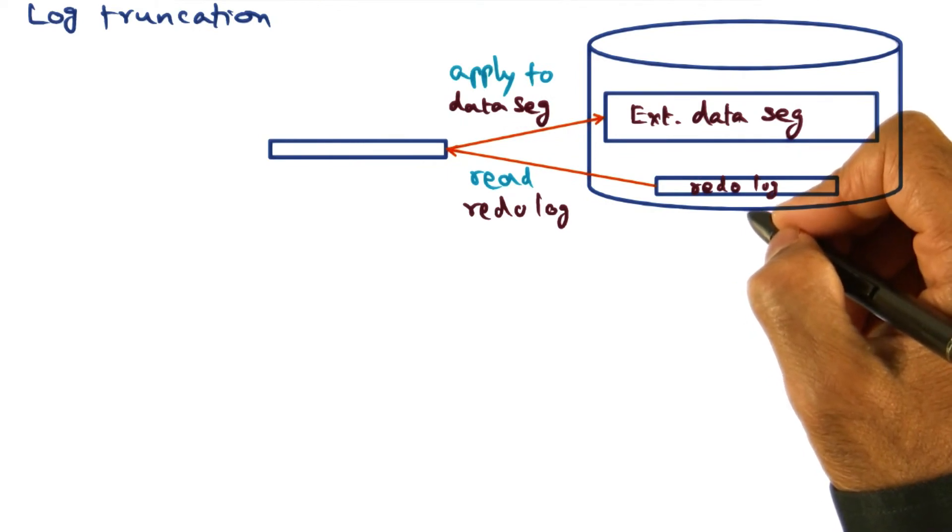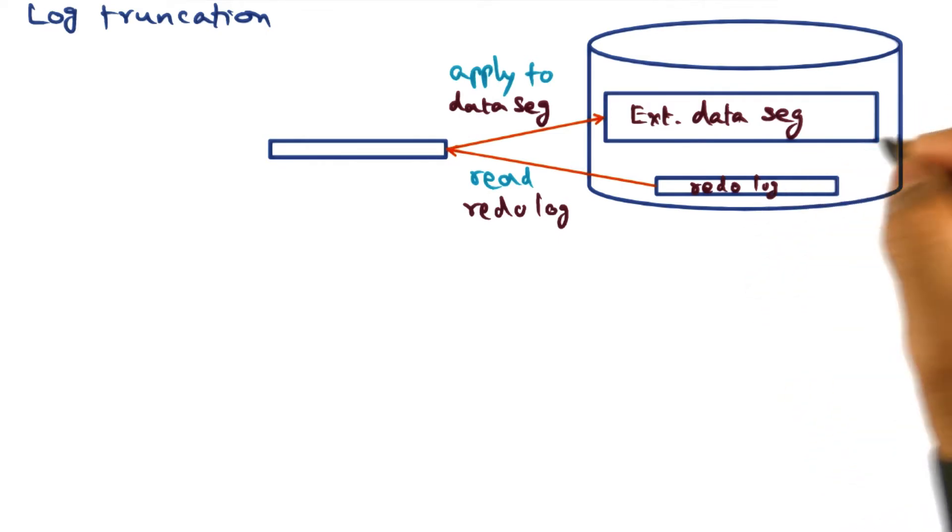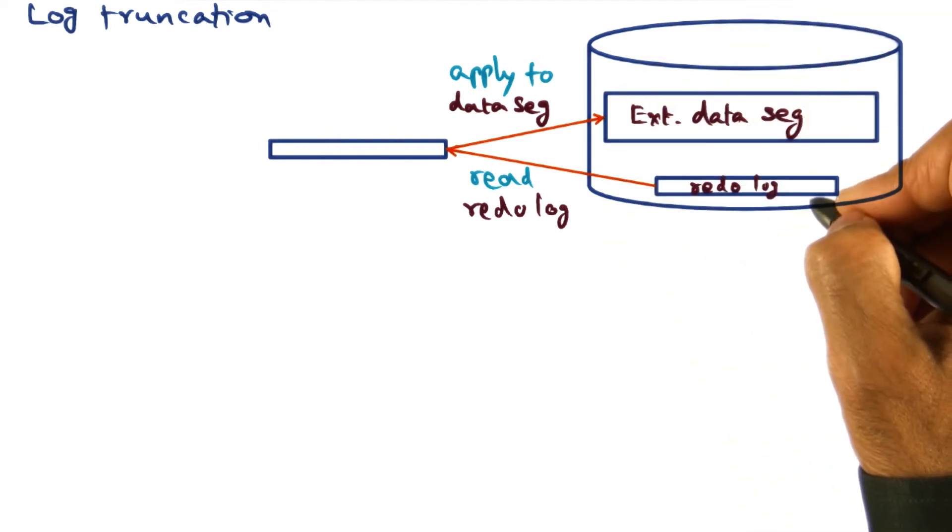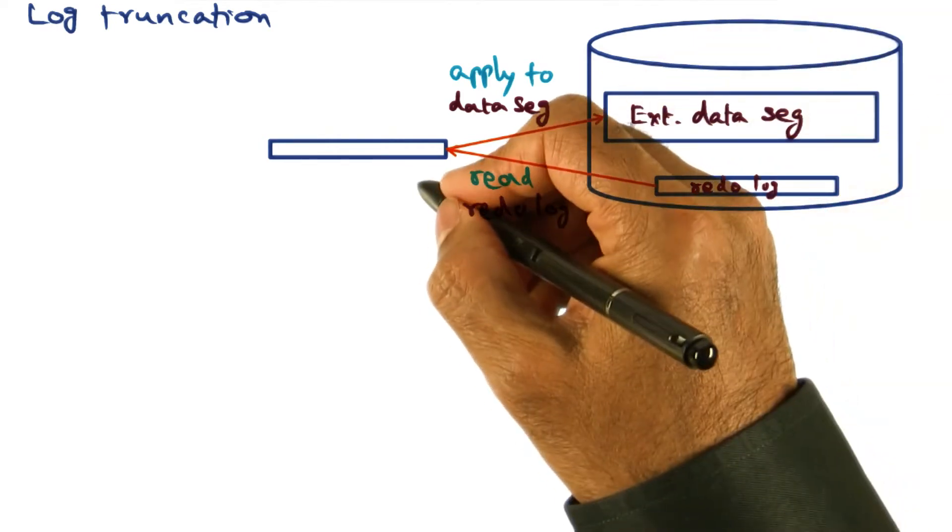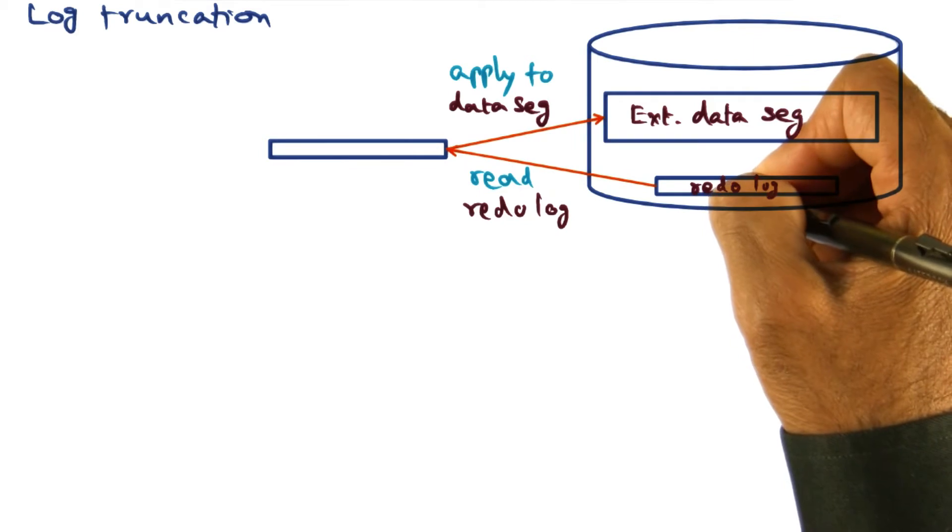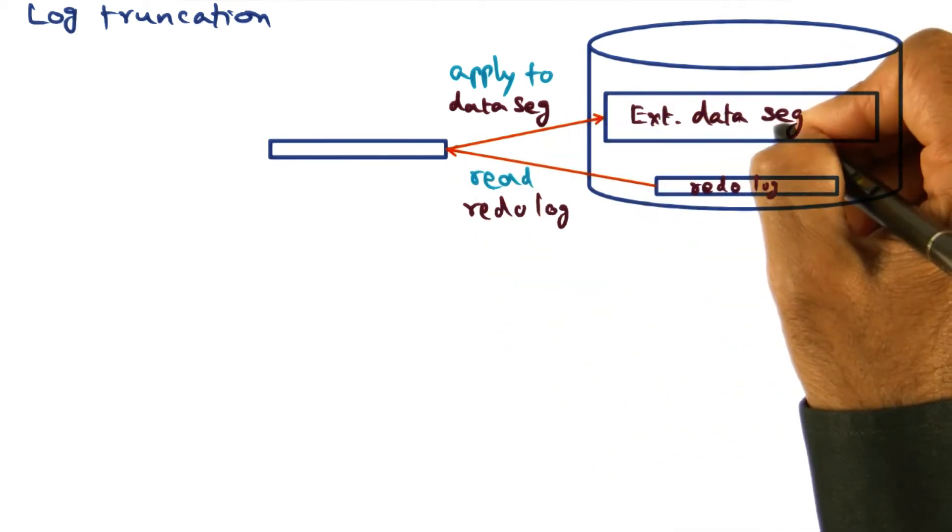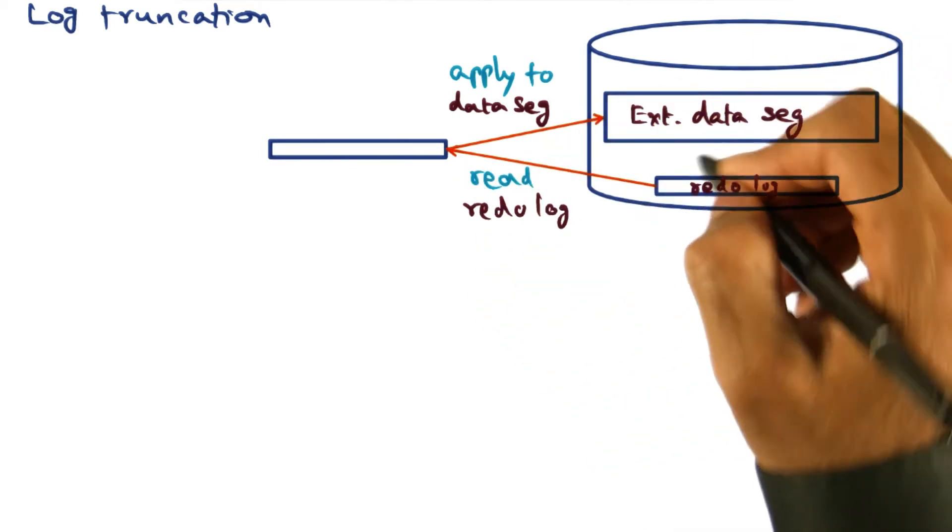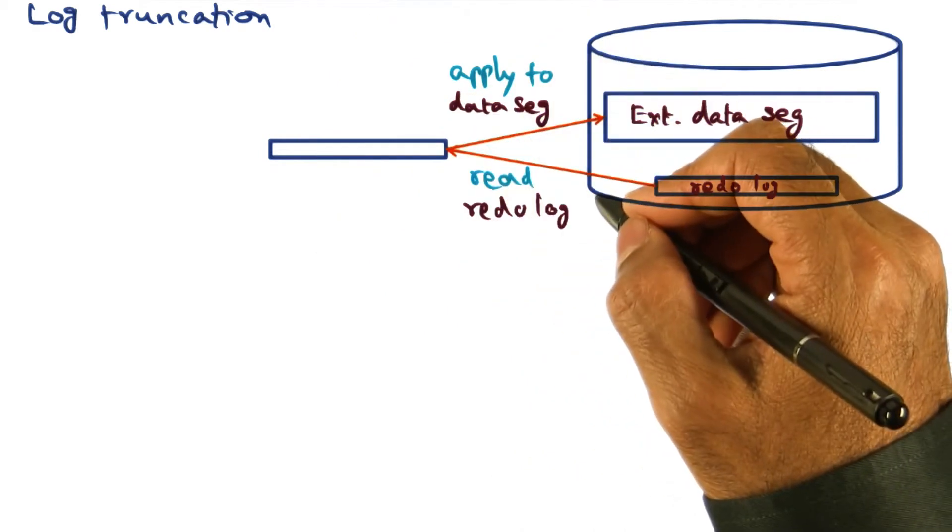So anytime the system, meaning the LRVM runtime, decides that it is time to do some cleanup, what it is going to do is it's going to go and pick some logs to clean, bring those logs into memory, read the redo log records, apply them to the appropriate data segment, and throw away the log records. So that's what log truncation is all about.